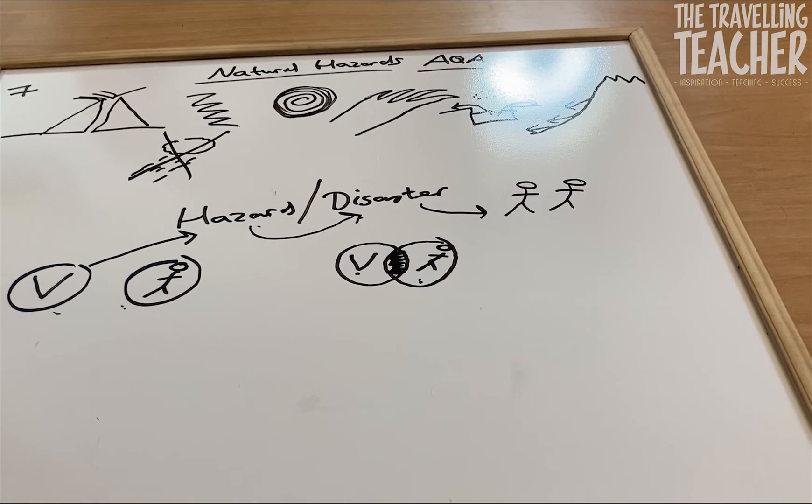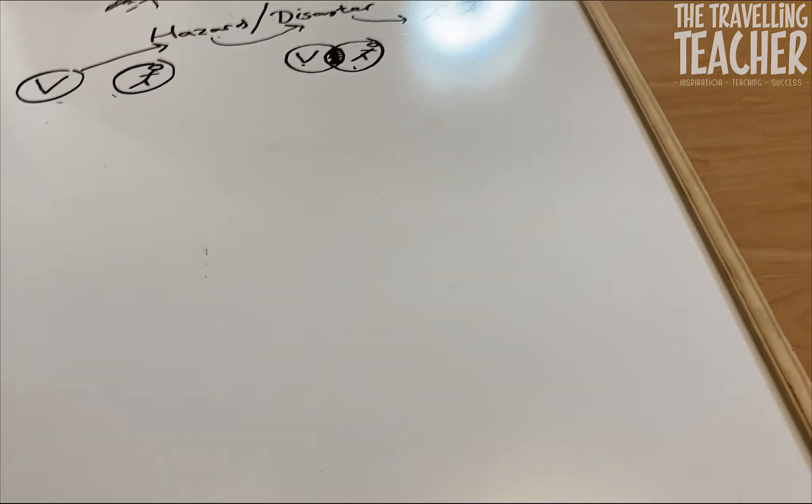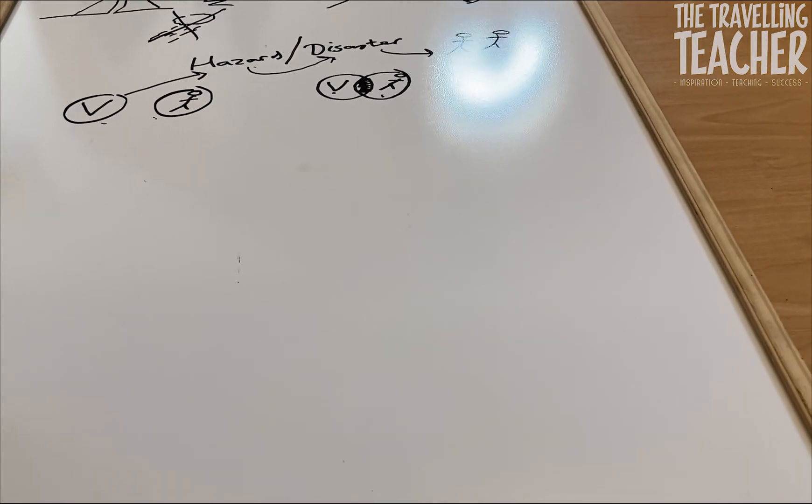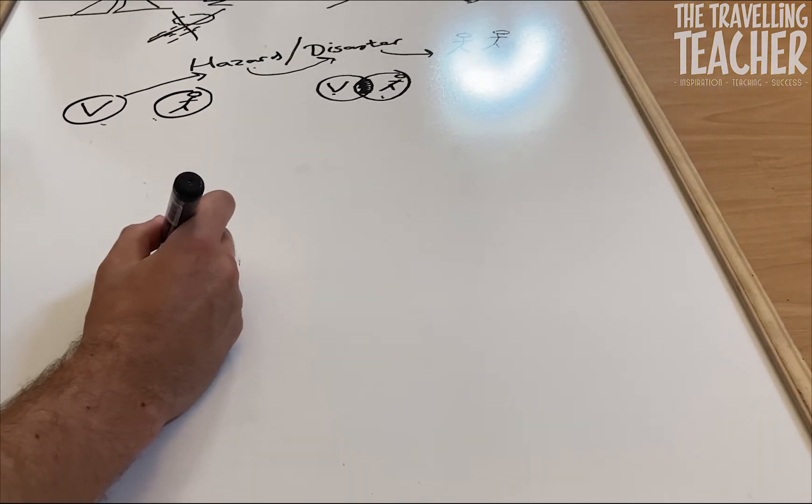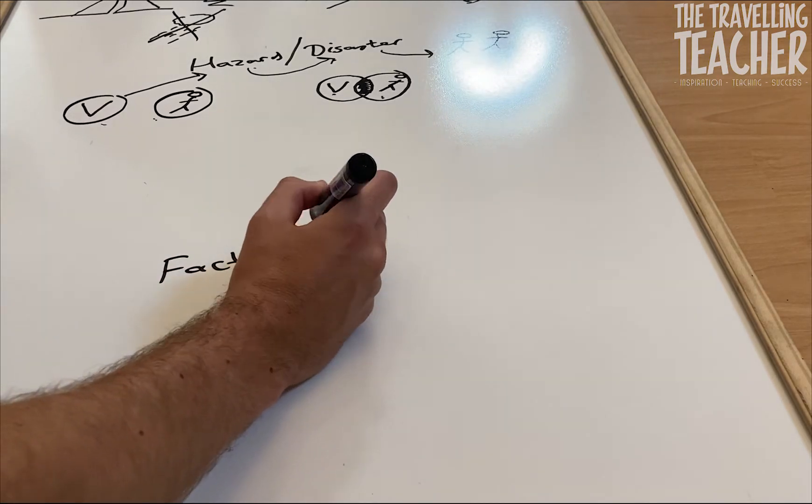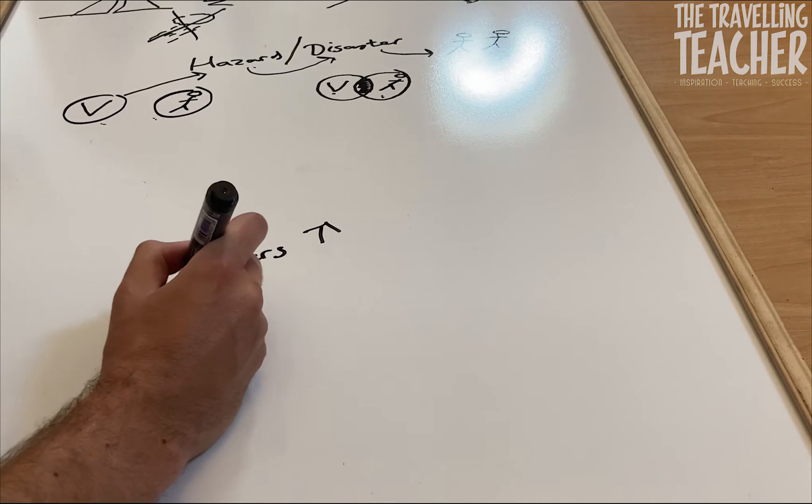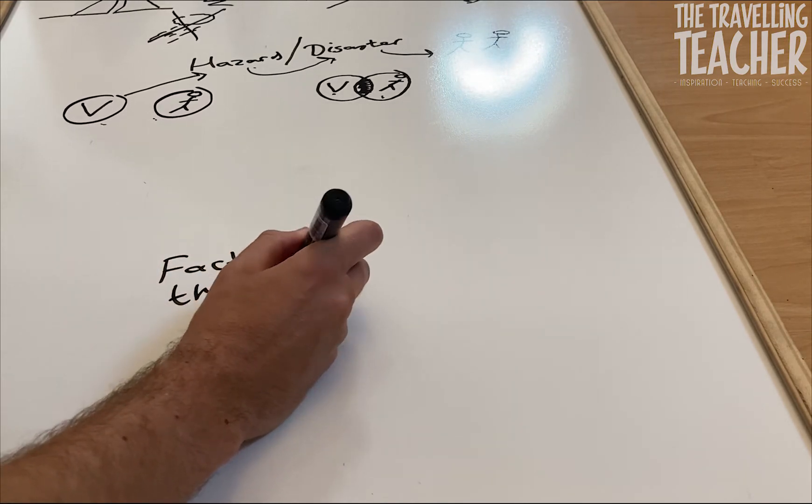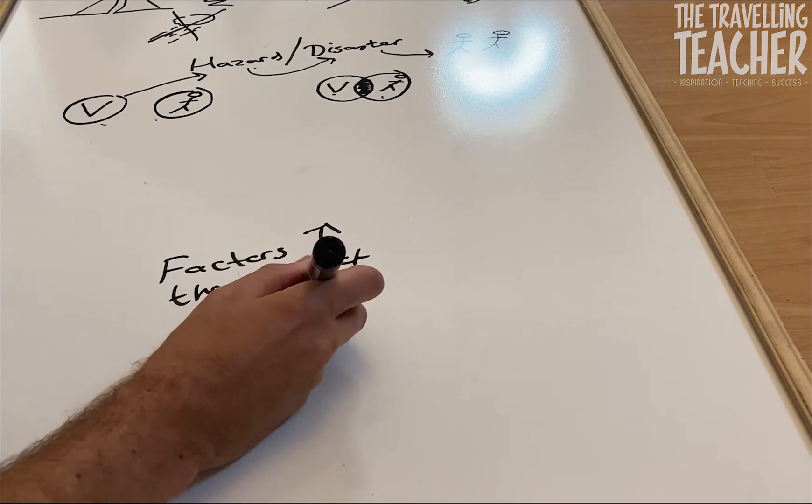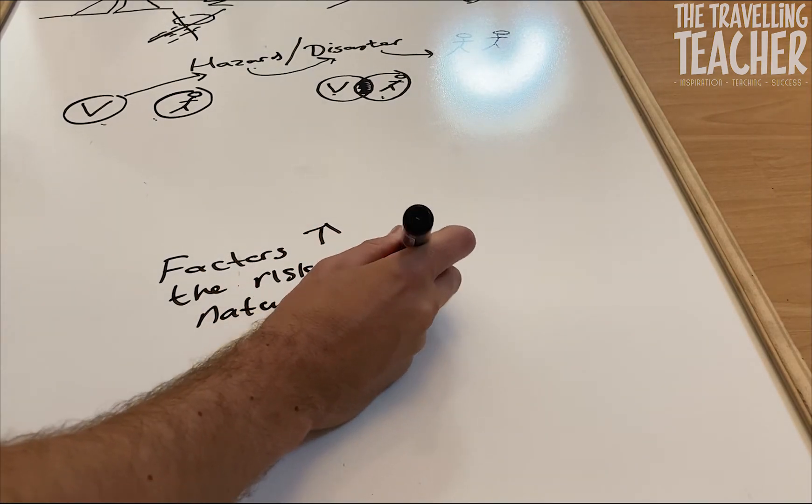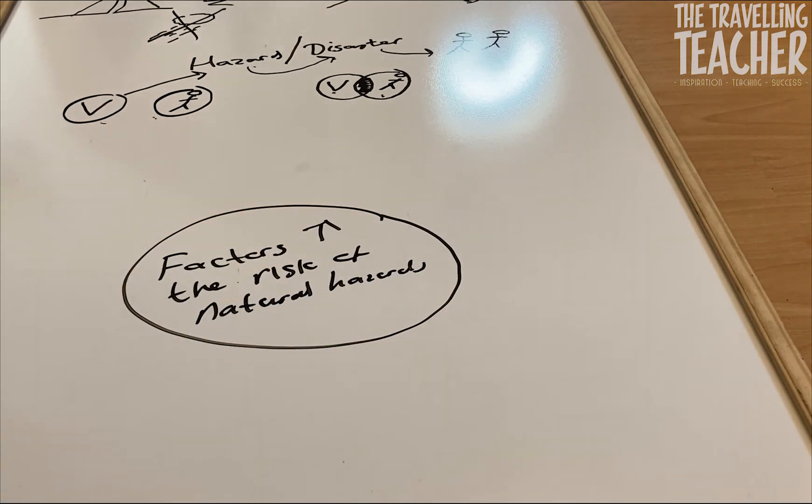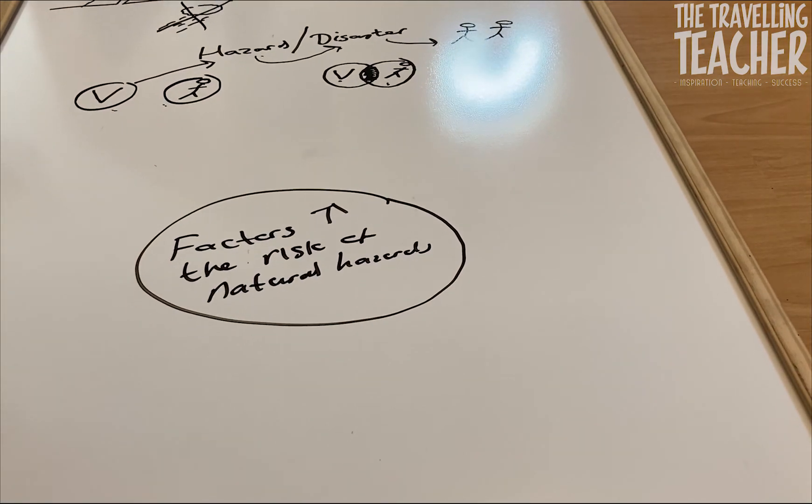And the last thing we're going to look at in this video, I'll just move the camera down a bit, is the different factors which can increase the risk of these seven natural hazards.